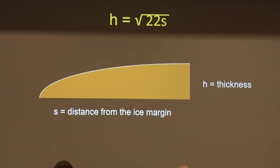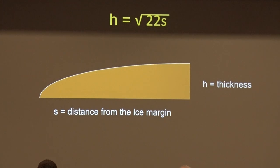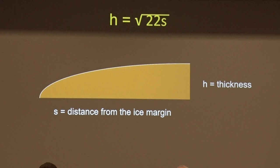Root of 22s. So that became my working formula as I was developing overlays to display on this large map. H is the ice thickness and s is the distance you are from the ice margin, everything measured in the metric system. That curve describes the rate of thickness of ice sheets when you're dealing with the edge of the ice sheet or a small distance in from the edge.